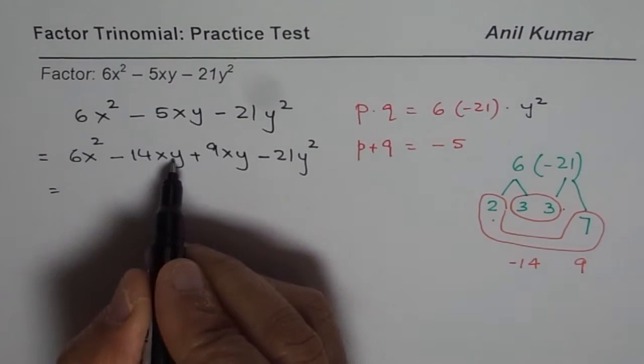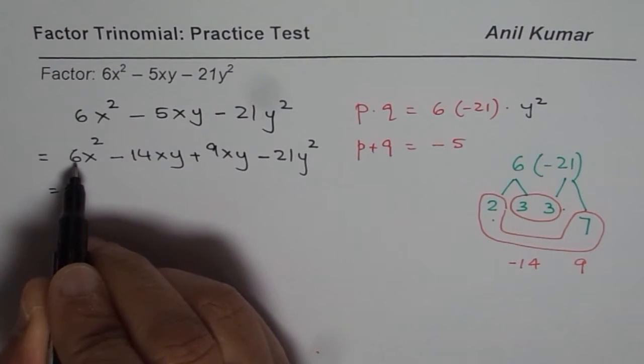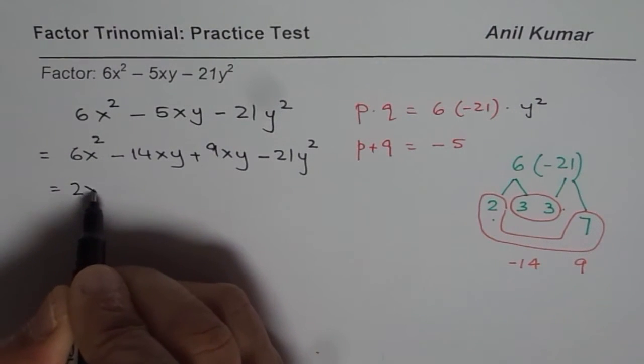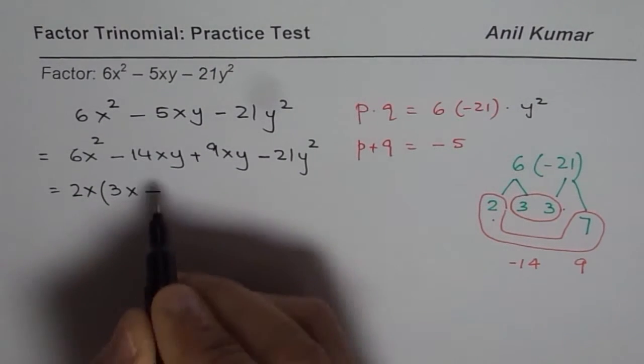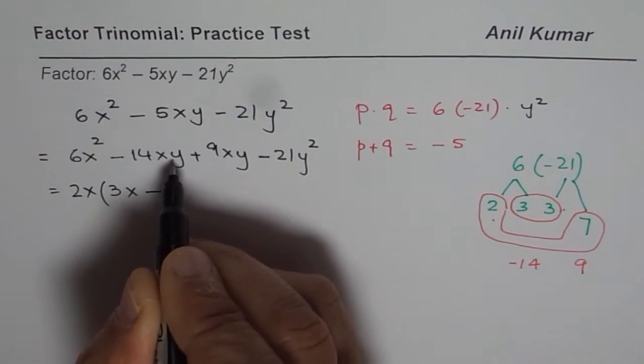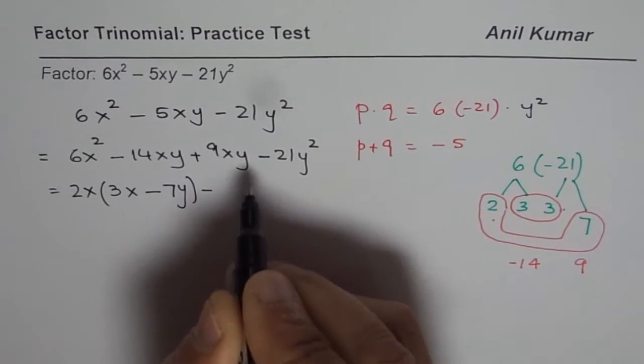Now we can do group factoring. 2x is common. So we get 2x common. We have 3x - 7y.